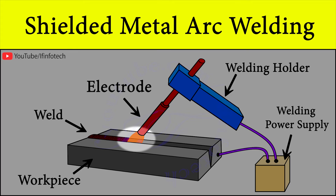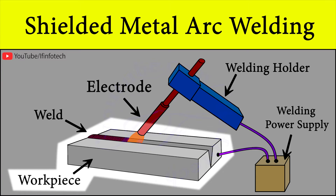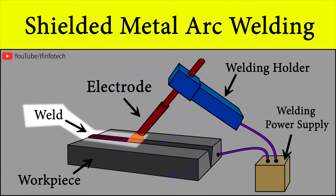The tip of the electrode needs to be at a lower angle to the workpiece, which allows the weld pool to flow out of the arc. Slag floats to the surface and protects the weld from contamination as it solidifies. Once it hardens, it must be chipped away to reveal the finished weld.